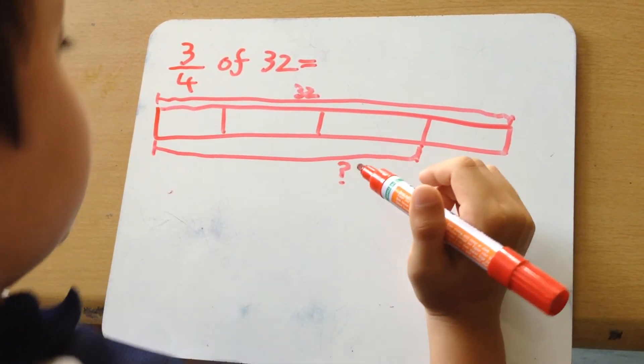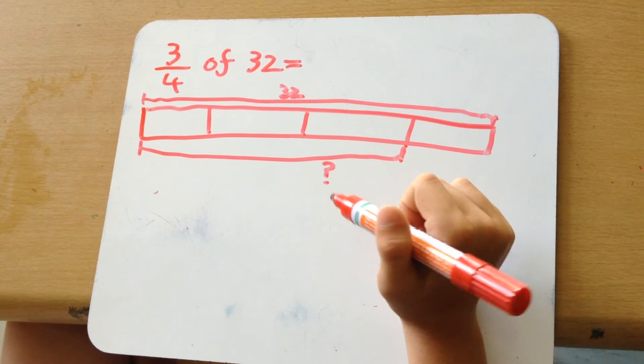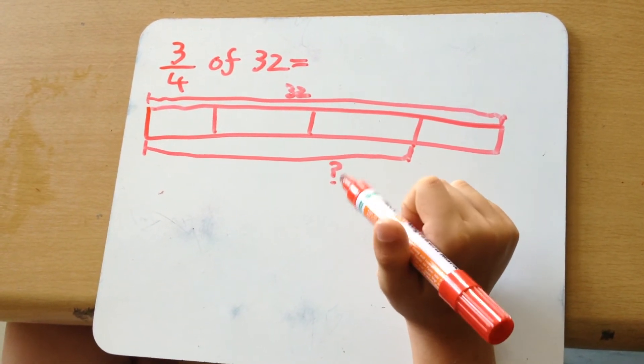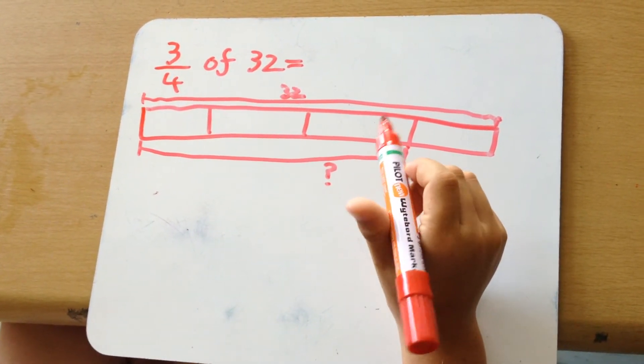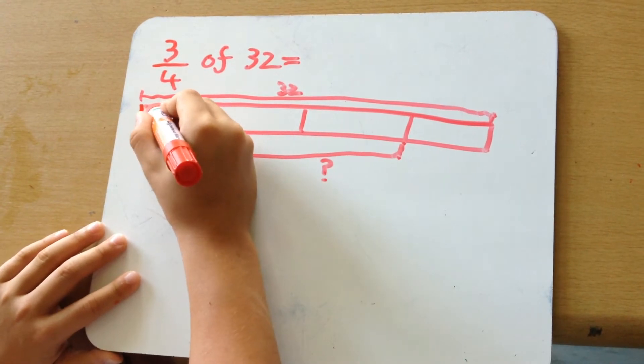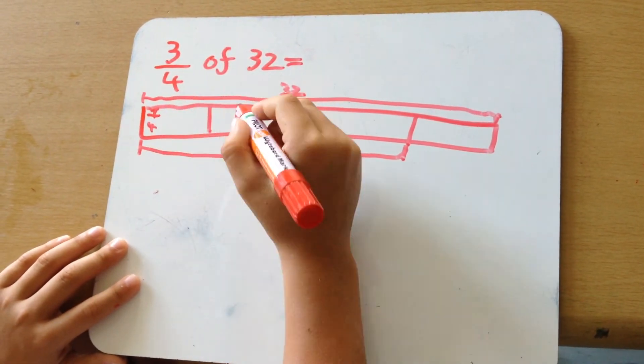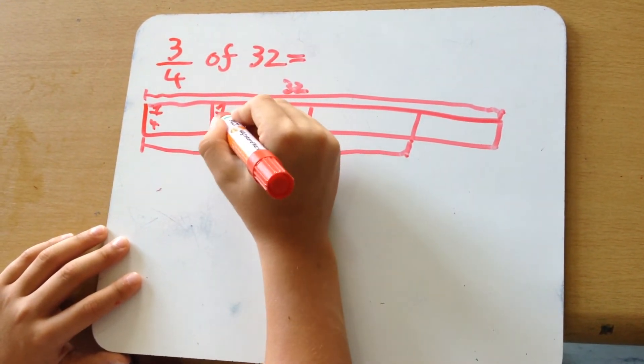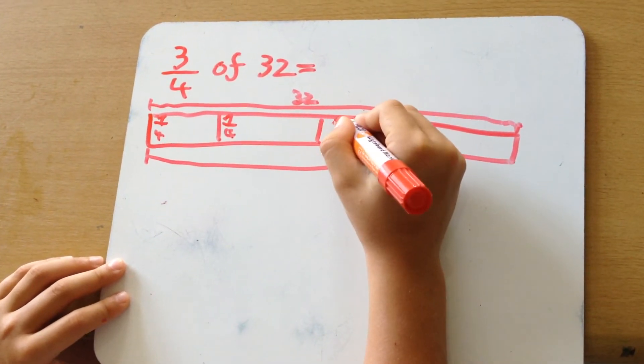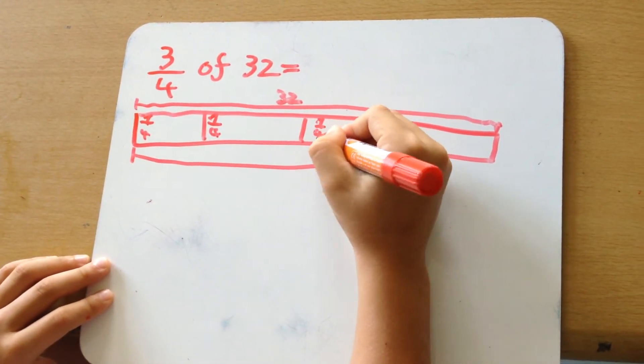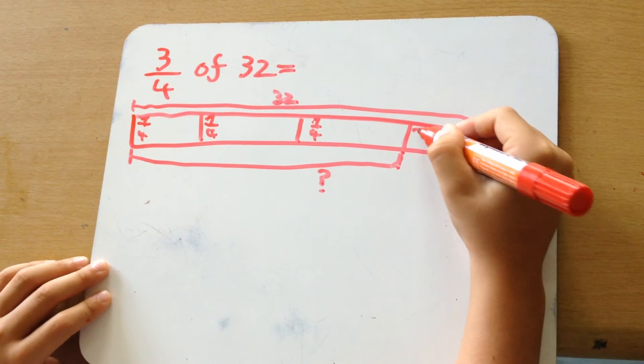And these three blocks we don't know yet. So I'm going to tell you how to find out the answer. These are one-fourths. Each block is one-fourth.